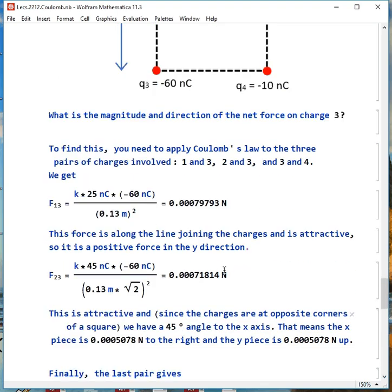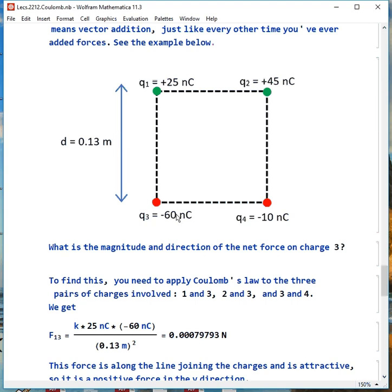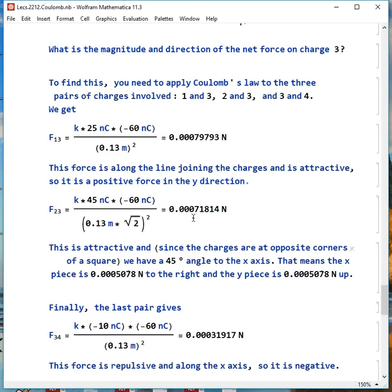Now, to get the components, we'll have to take that times cosine of 45 and sine of 45. So that means 0.000508 Newtons to the right and the same size force up.